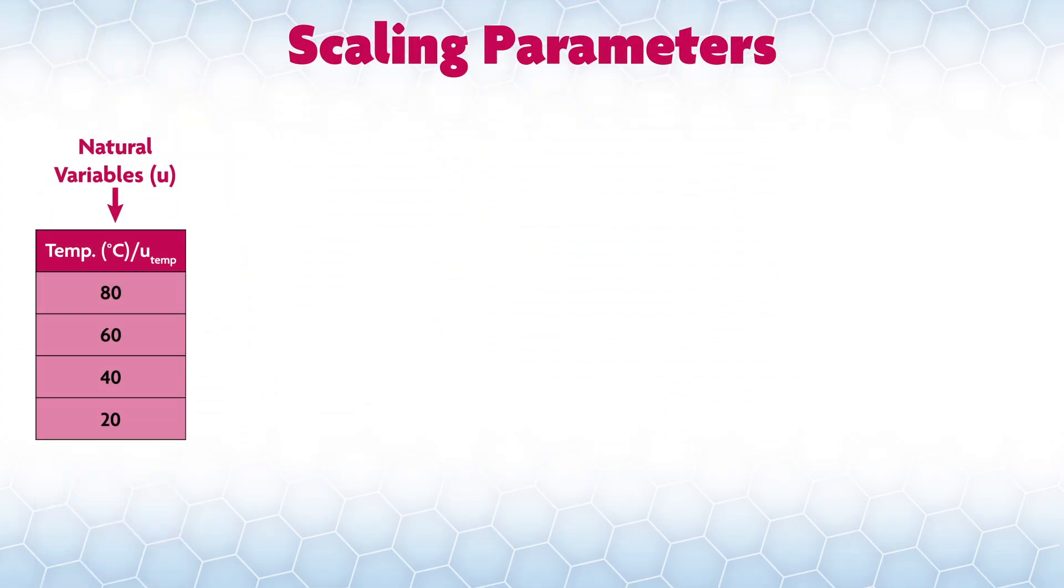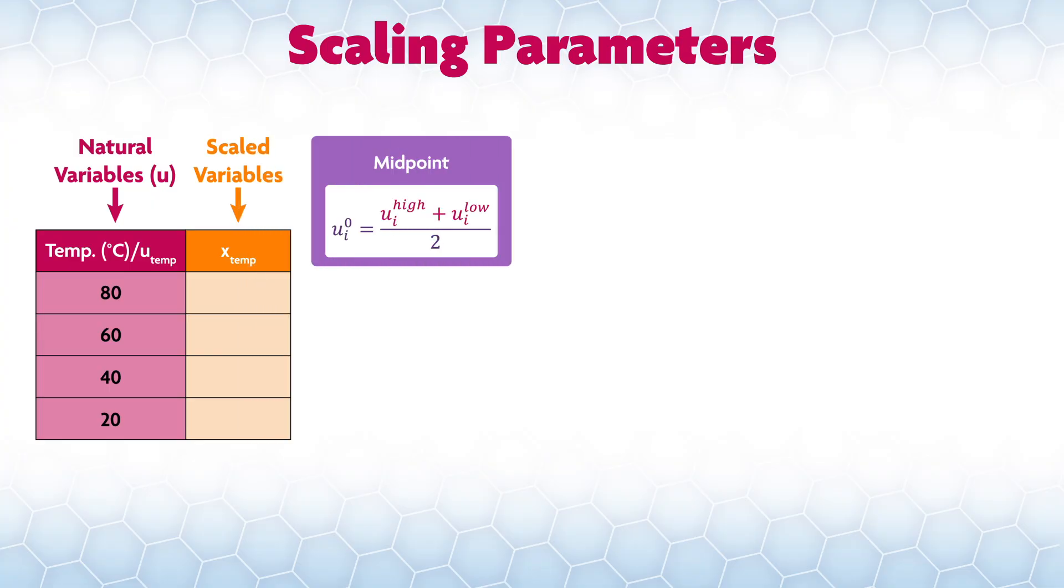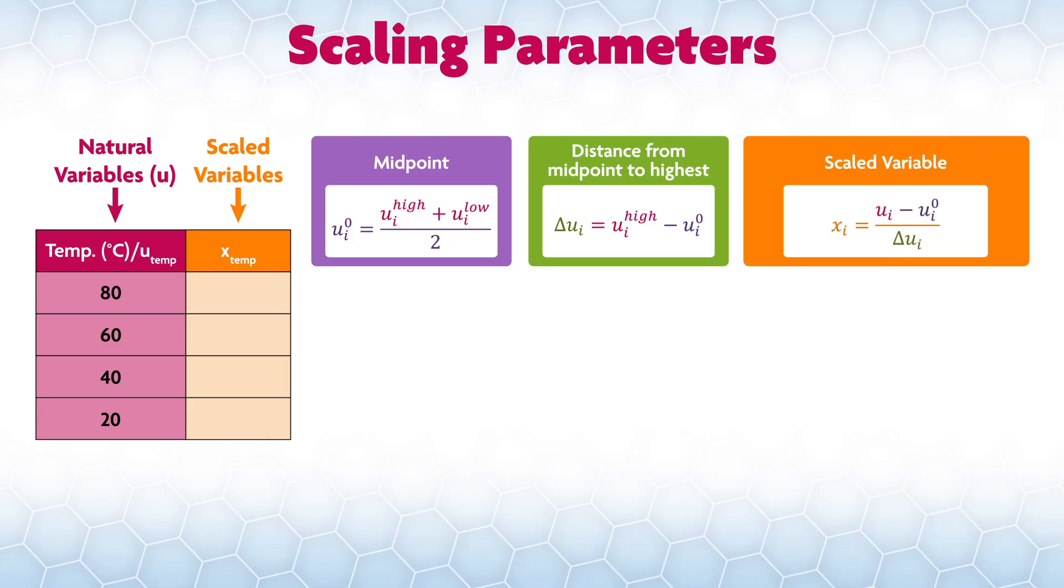Here's an example for scaling. Let's say you have four temperatures in degrees Celsius, 20, 40, 60, 80. These raw temperatures are sometimes called the natural variables and we'll give them simple U. To get the scaled values, first you calculate the midpoint of the range of the variables, which just requires taking the average of the highest and lowest values. We'll call the midpoint of the ith variable ui0. The other thing you need to calculate is the distance from the midpoint to the highest variable, so half the span. We'll call this delta ui. To calculate the scaled variable, which we'll just call x, use this equation. This will give your variables as a set of numbers from plus one to minus one. A spreadsheet makes pretty quick work of this.